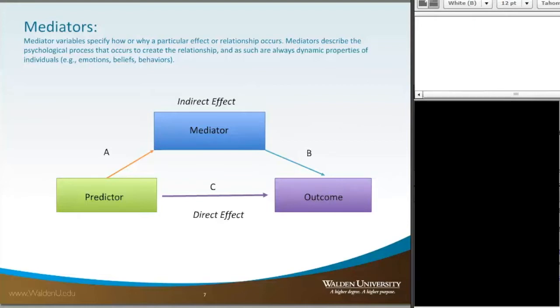We also have a relationship between the predictor and the mediator, which is designated by the orange arrow A, and then we have a relationship between the mediator and the outcome, which is B. Without the mediator, there's a relationship between the predictor and the outcome.